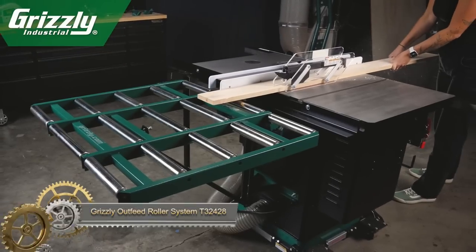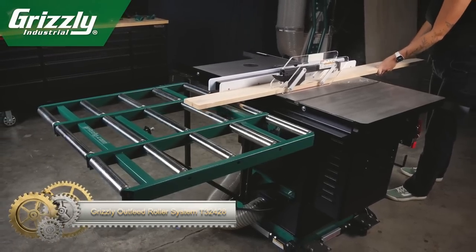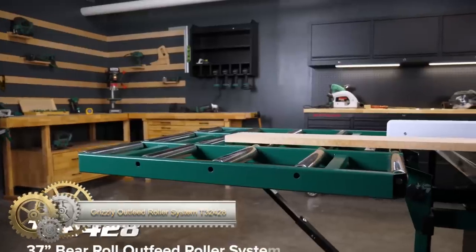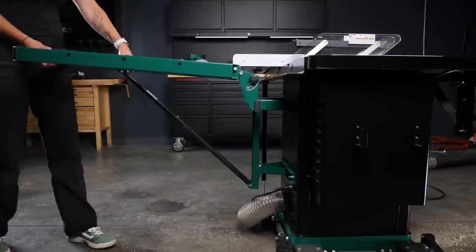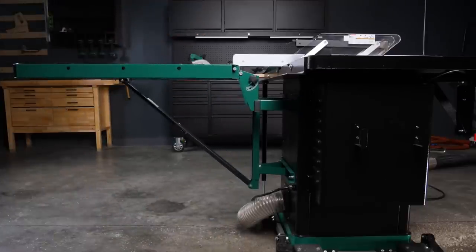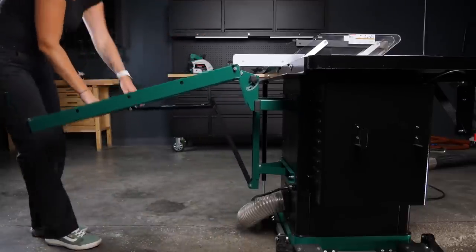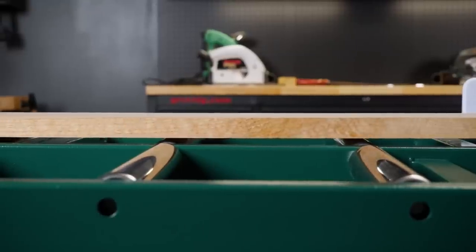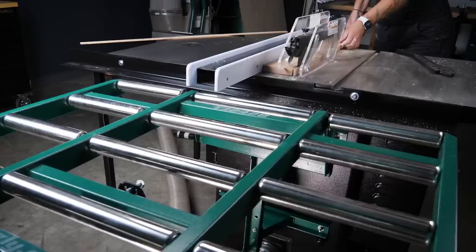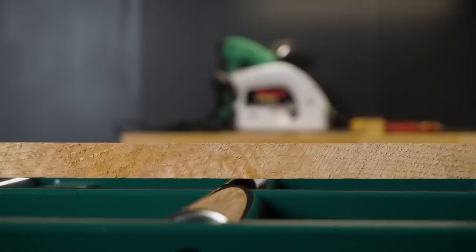The Grizzly Outfeed Roller System 32428 is a reliable table saw accessory designed to enhance safety and accuracy while working with long boards. Made of sturdy steel, it features two 37-inch urethane-covered rollers that can be adjusted to align with the table saw blade. The system is easy to set up and can be conveniently folded for storage when not in use.